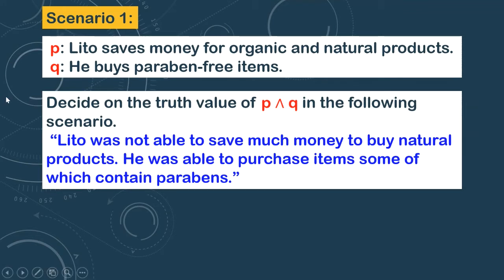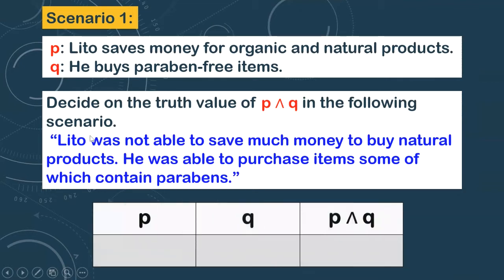So how do we do that? You can see our proposition P. If what proposition P states actually happened in the scenario, then the truth value of P will be true. But if it did not happen in the scenario, then the truth value of P will be false. Same with Q. We'll make a small truth table: find the truth value of P, truth value of Q, and finally the truth value of P and Q, because that is what is being asked.